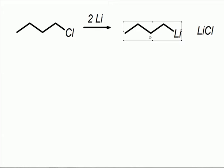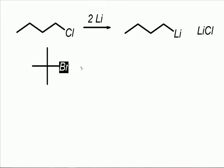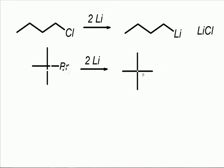This is butyllithium, sometimes called n-butyllithium. Another really common organolithium you will run into is t-butyllithium. We'll make it from the bromide this time — same thing, two lithium atoms — and you make t-butyllithium with lithium bromide as a byproduct.